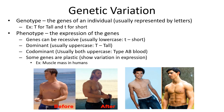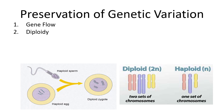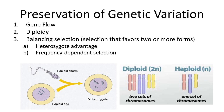There are things which preserve genetic variation in a population to ensure the whole population is not uniform in its traits. These include gene flow, being diploid, and balancing selection — two types of which are heterozygote advantage and frequency-dependent selection.